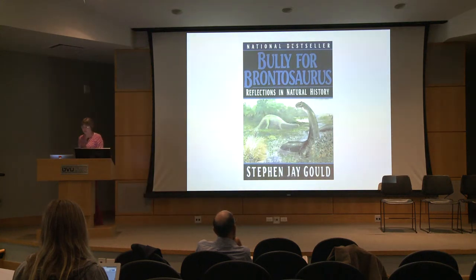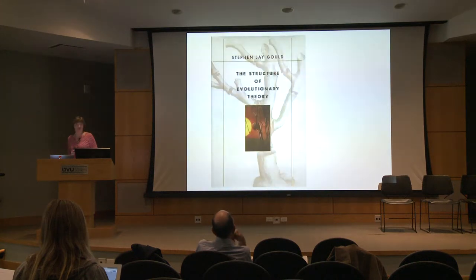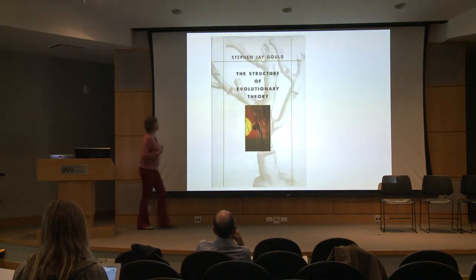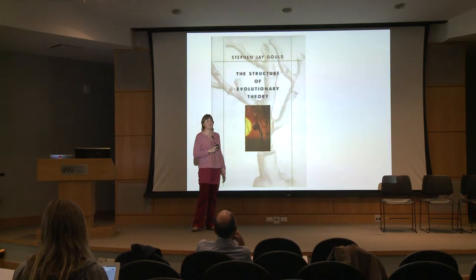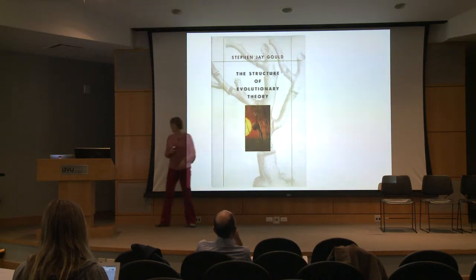Toward the end of his life, right after he died, this immense book — The Structure of Evolutionary Theory — was published. It's about a thousand pages thick. Maybe you don't want to start with that.